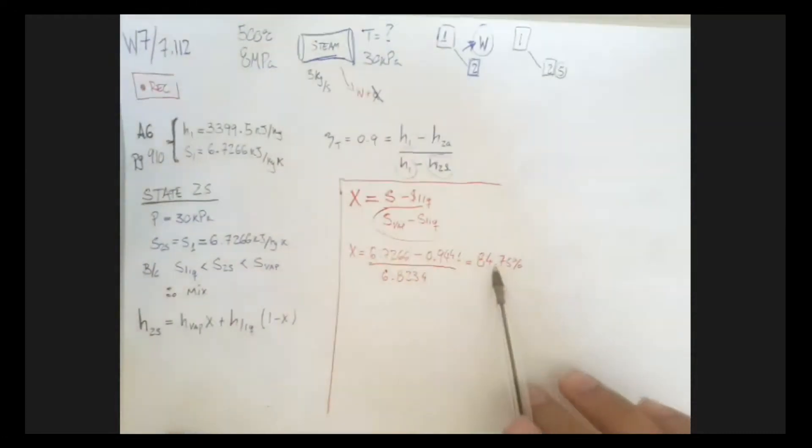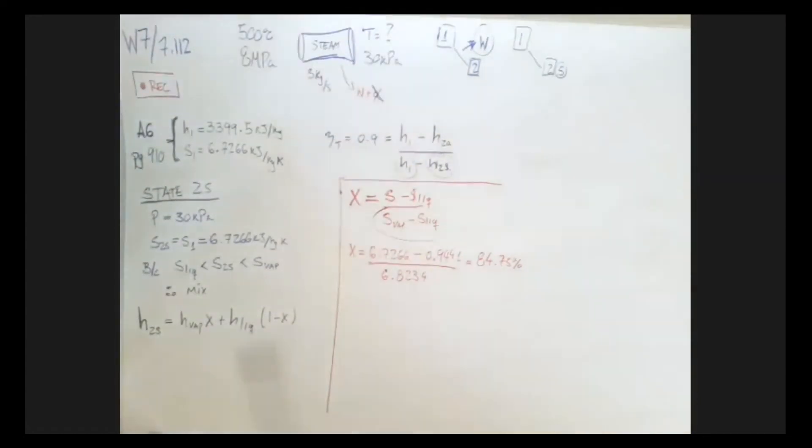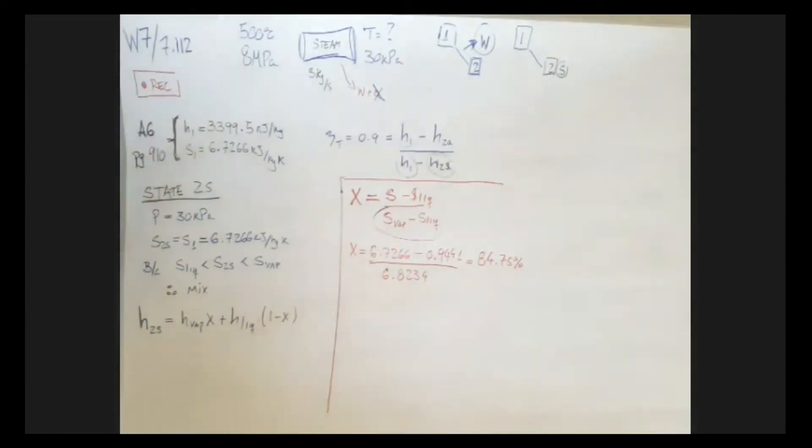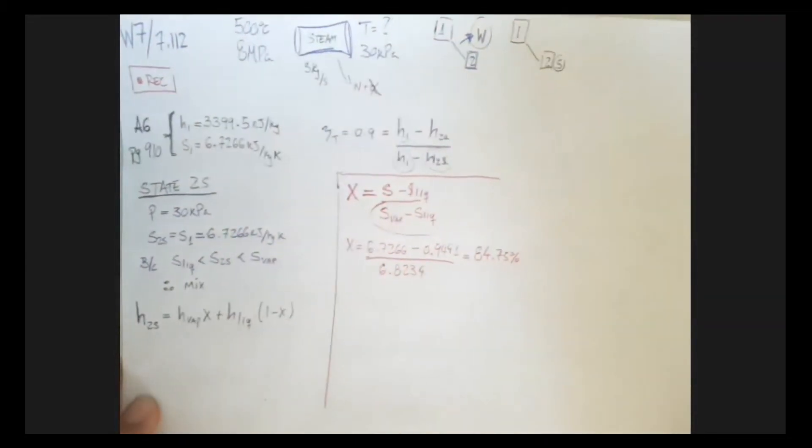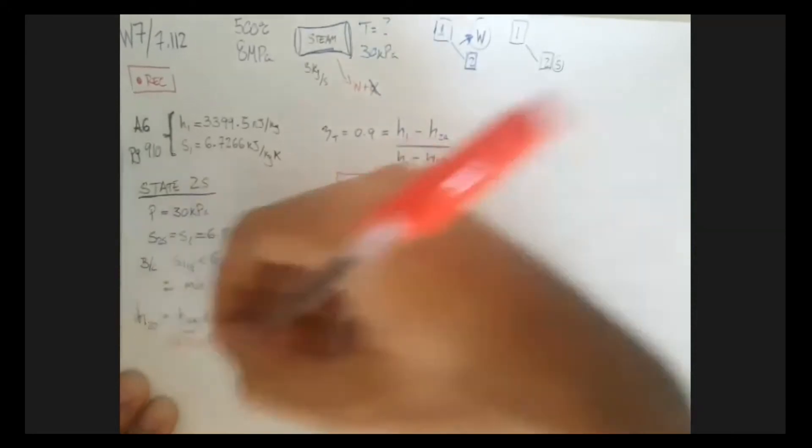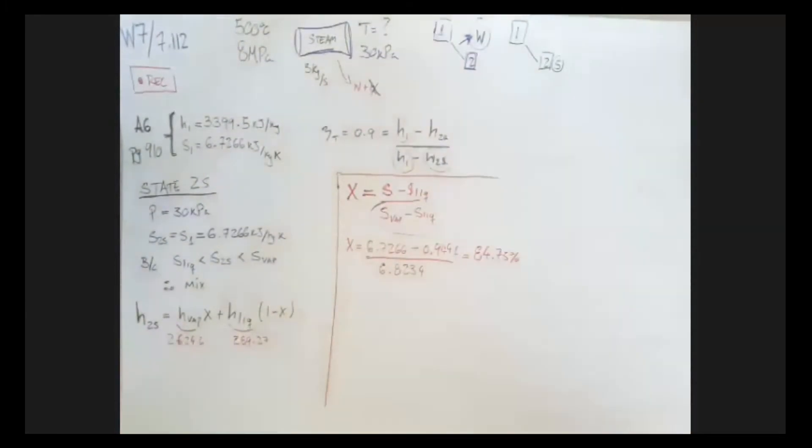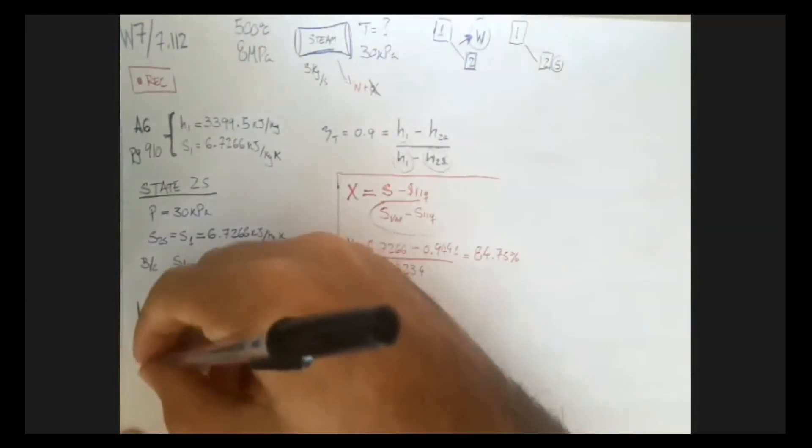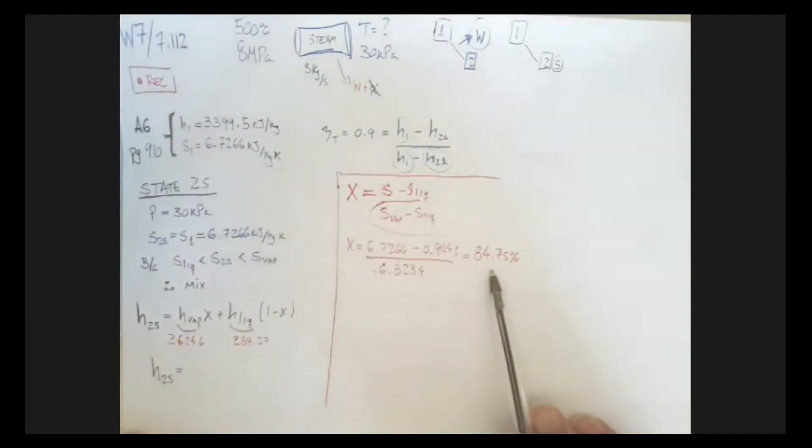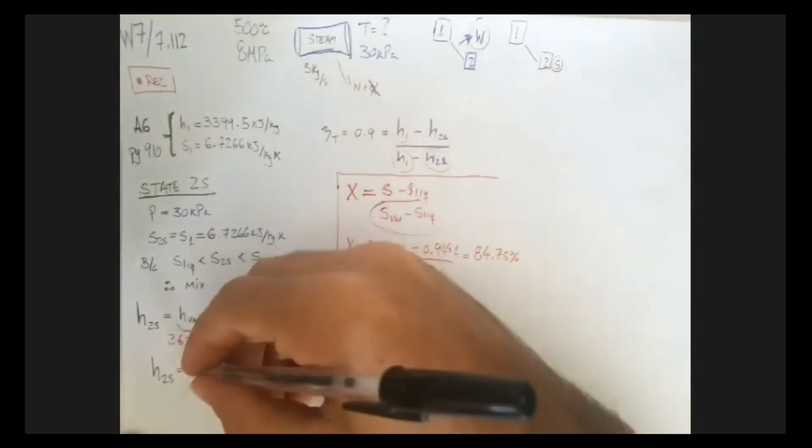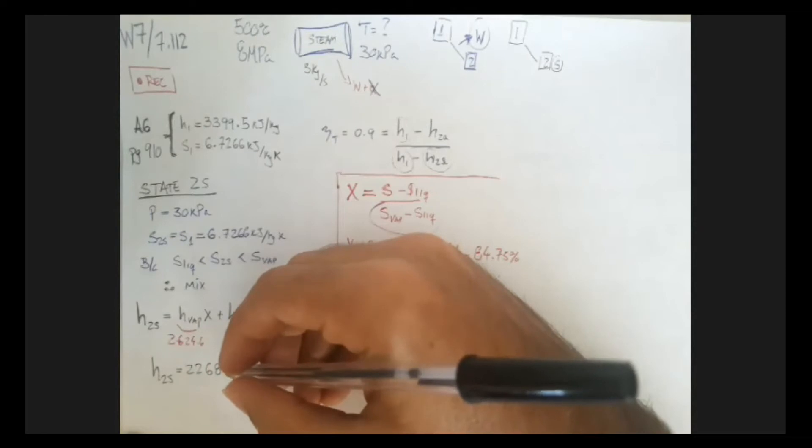Brilliant. Now that we have that quality, we can go ahead and use this quality in here. We can grab the enthalpy of the saturated vapor from the table, the enthalpy from the saturated liquid from the table, and the quality is going to be 84.75. So what I'm going to do is, I'm going to give you guys the value. So this one here, the vapor one is 2624.6. The liquid one from the table again is 289.27. And we do that math, and we end up with H2S equals, check it out, 85% vapor, so it has to be way closer to 2624 than to 289. And indeed, what I got was 2268.5.